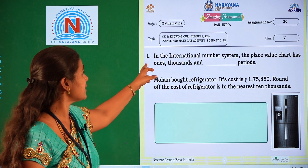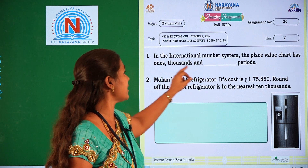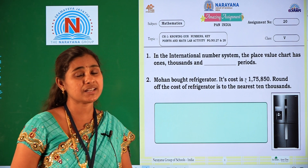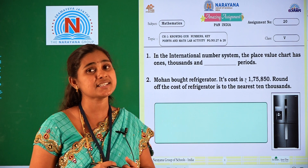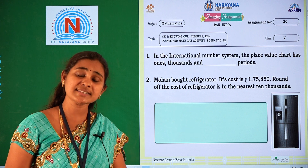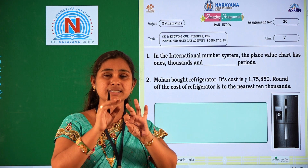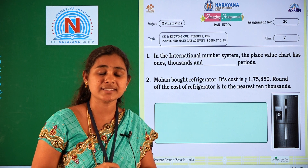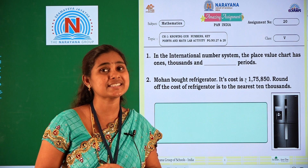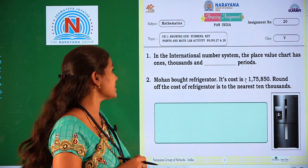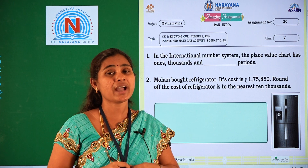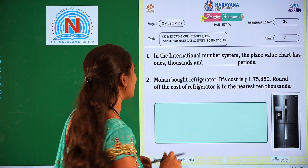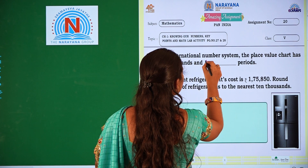What is our first question? In the international number system, the place value chart has ones, thousands, and dash periods. We already learned the Indian system of numeration as well as the international system of numeration. In the Indian system we have four periods: ones, thousands, lakhs, and crores. Similarly, in the international system of numeration, we have three periods. How many periods? Three periods — ones, thousands, and the third one is millions.